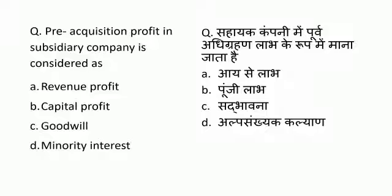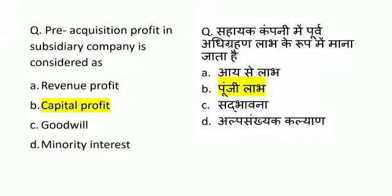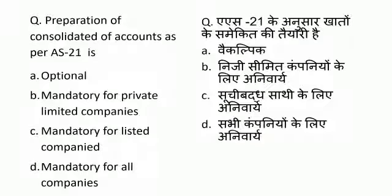Pre-acquisition profit — options are: Capital Profit, Goodwill, and Minority Interest. The correct answer is option number B — Pre-acquisition profit in a subsidiary company is considered as Capital Profit.